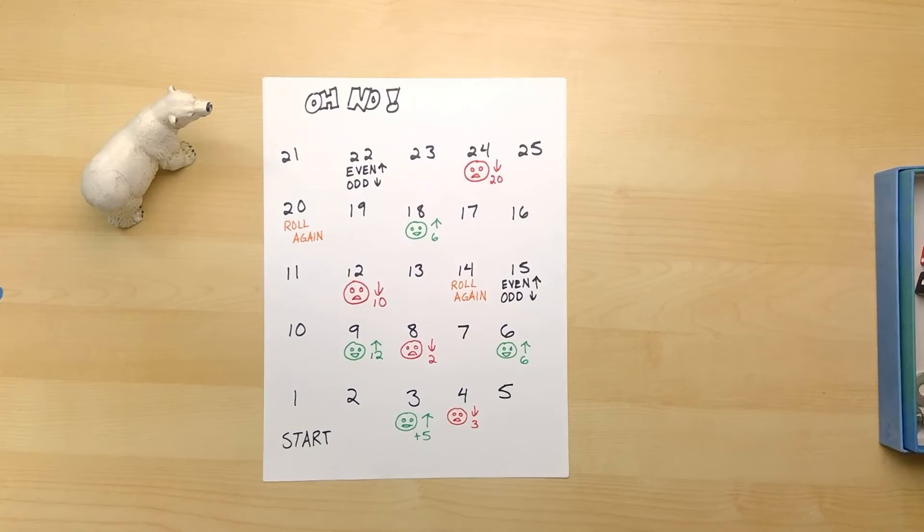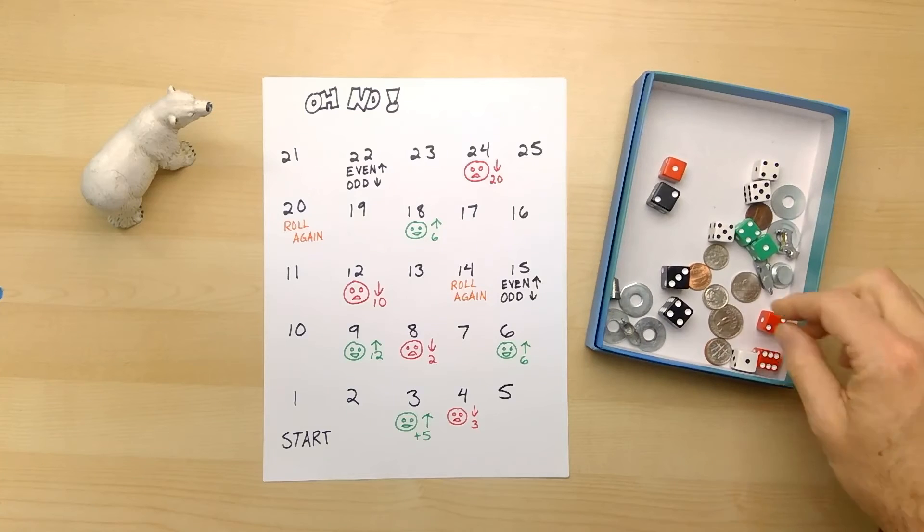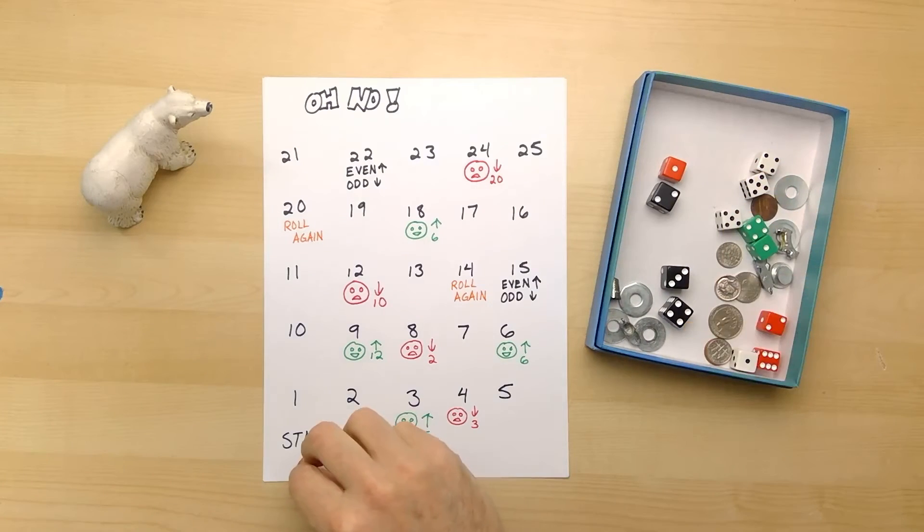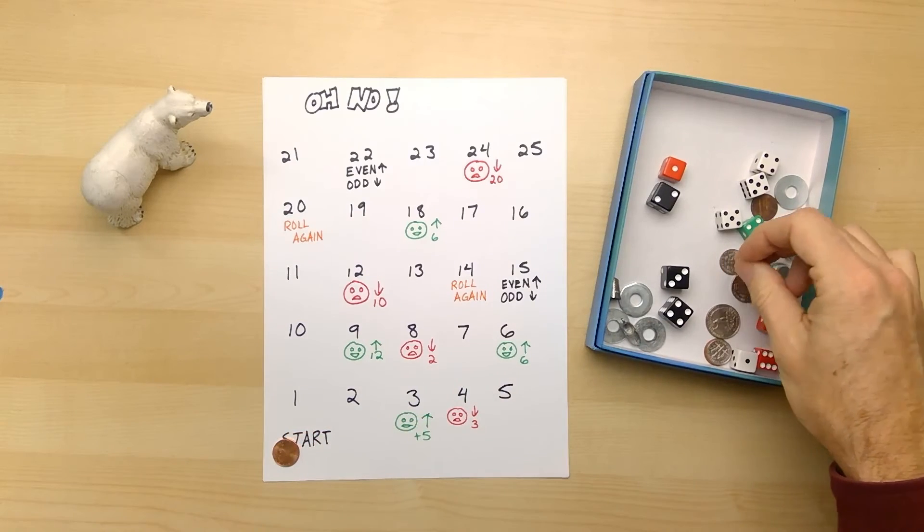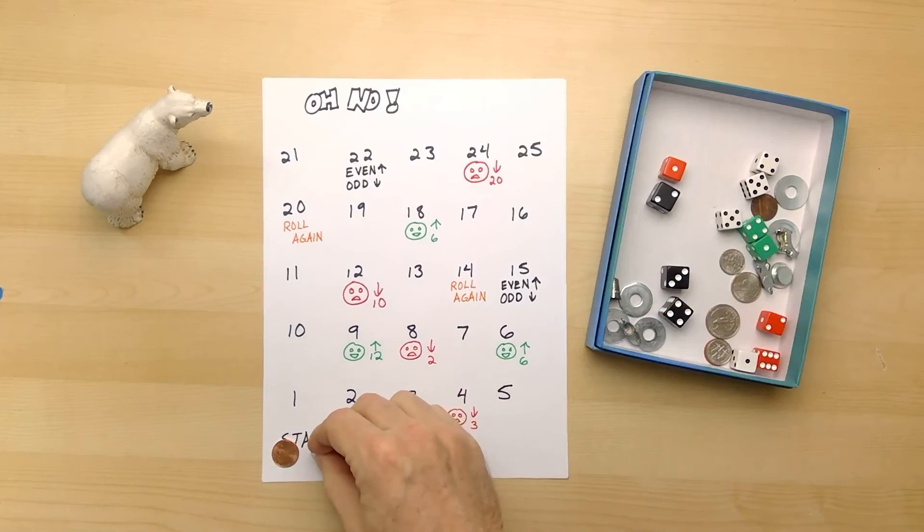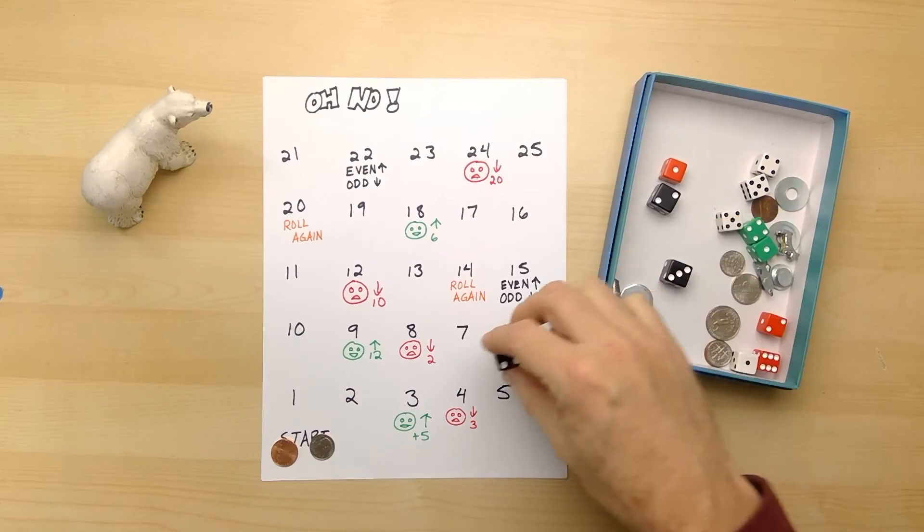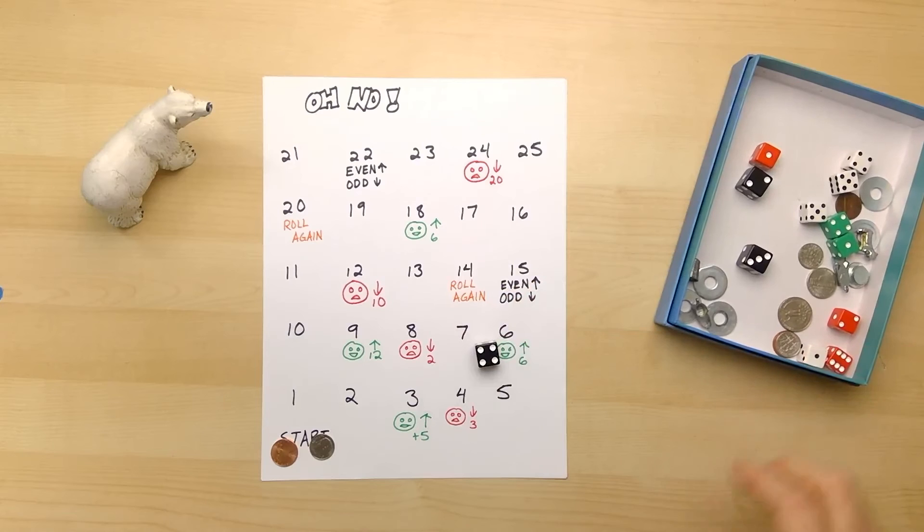So let's try the game. We're going to need some players. Let's see, how about a shiny copper penny and how about a silvery dime? That's good. And a dice, this is a good dice, let's use this one.